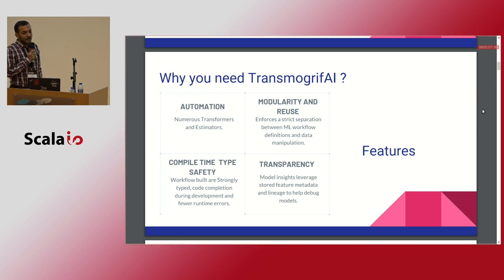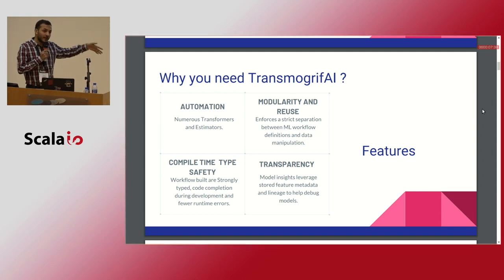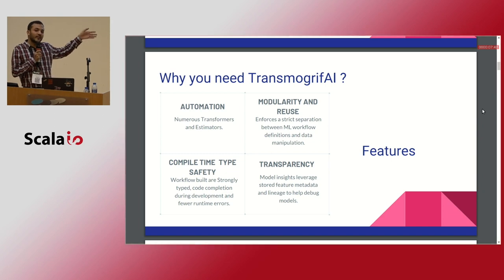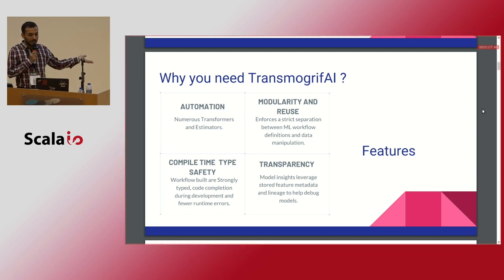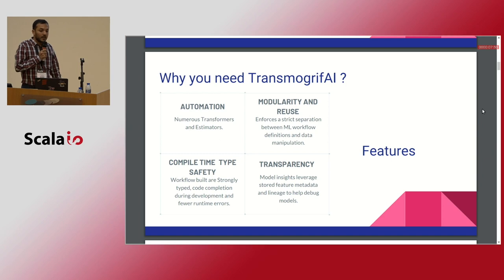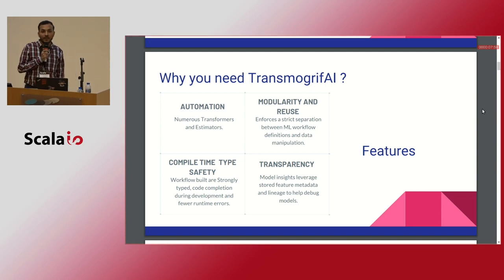Why do you need TransmogrifAI? Because it does automation. This framework is built on top of Spark, so technically it leverages all the features you get in Spark ML — all the transformers and estimators — but it's a very high-level API which automates everything and gives you transparency on top of that, plus compile-time safety.